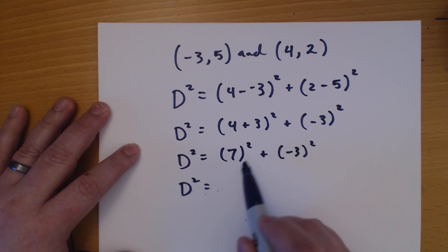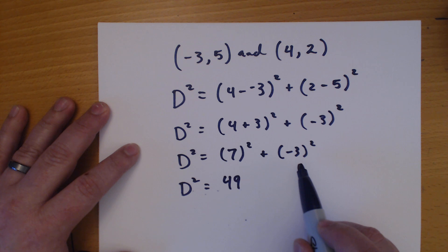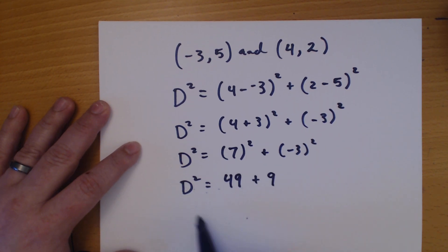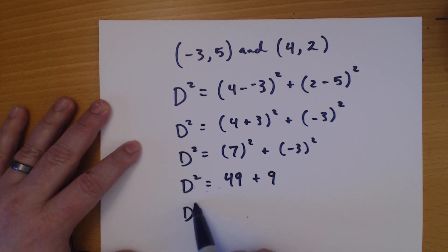7 squared, that's 7 times 7, and that's 49. Negative 3 times negative 3 is a positive 9. 49 plus 9 is 58.